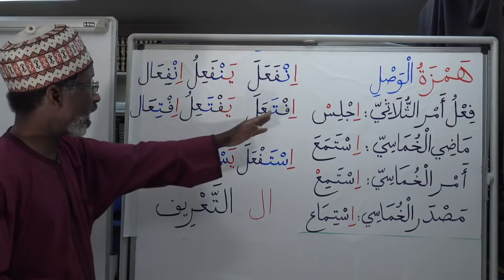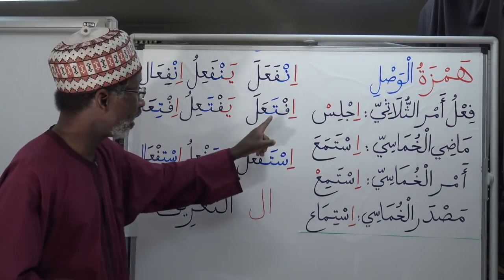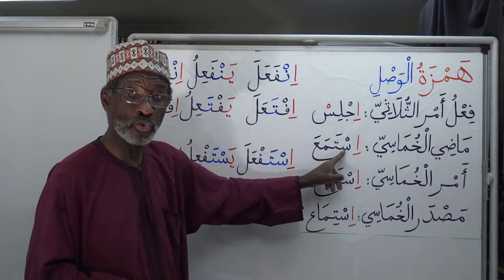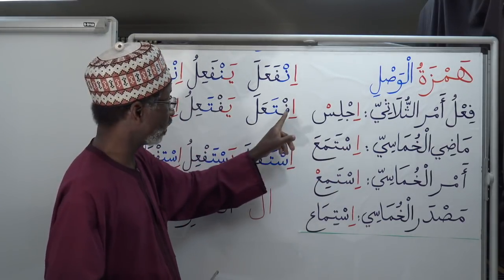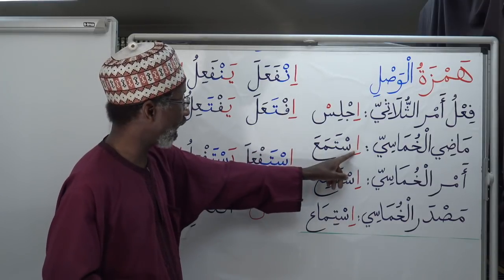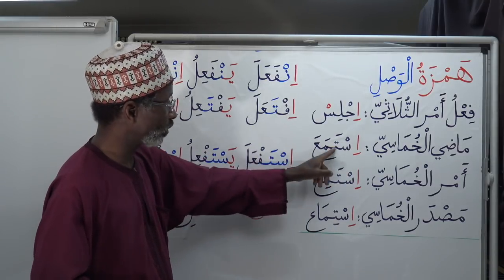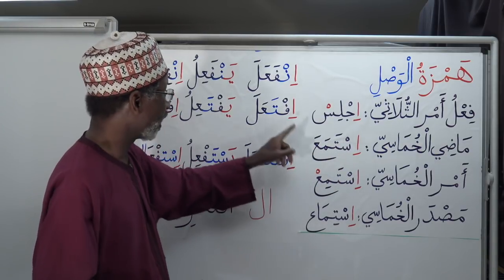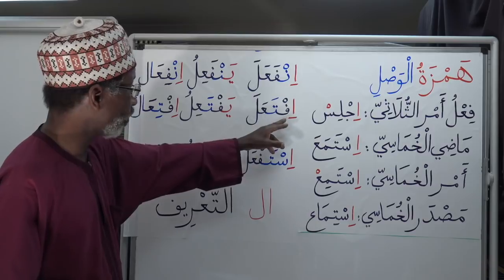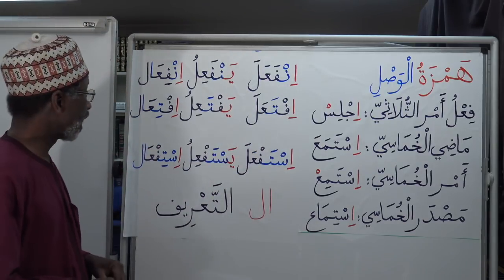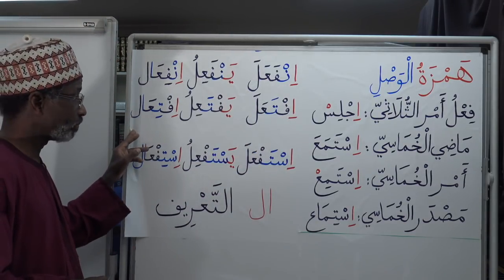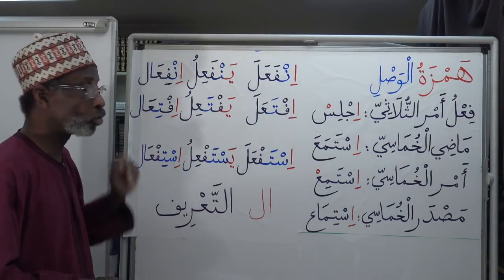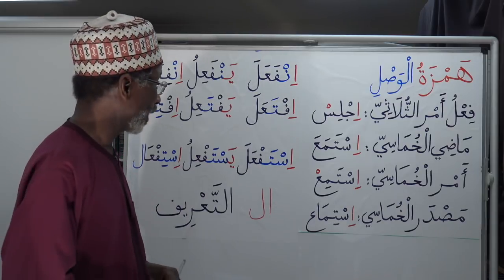Here you have ifta'ala, which is equivalent to istama'a — form eight. You can see the original root letters; the extra alif and extra ta are added. The alif in ifta'ala — whether past tense or verbal noun — should not carry the Hamzah symbol either.